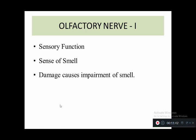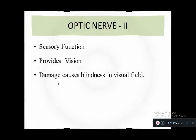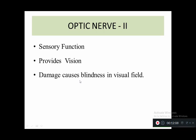The first cranial nerve is the olfactory nerve. Its function is sensory and it is responsible for the sense of smell. Any damage to this nerve will affect smell. The second cranial nerve is the optic nerve. It is also sensory and is responsible for providing vision. Any damage to this nerve causes blindness in the visual field.